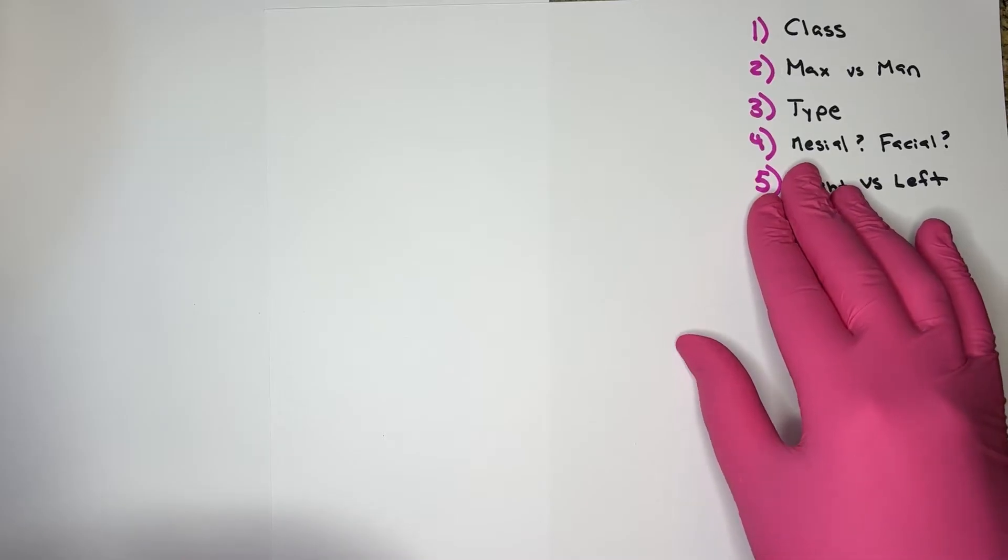Step number four, which side's mesial, which side's facial? For maxillary premolars, the side with the taller cusp is the facial. So this side's the facial.